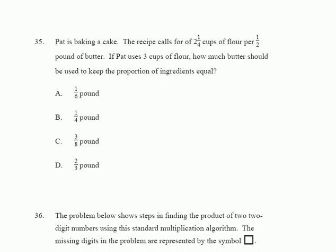Okay, question number 35 has our friend Pat baking a cake. Here's the original recipe. The recipe calls for two and a quarter cups of flour per one-half pound of butter. Now here's what Pat's gonna do: she's going to increase the amount of flour to three cups of flour. She needs to know how much you should increase that butter by.